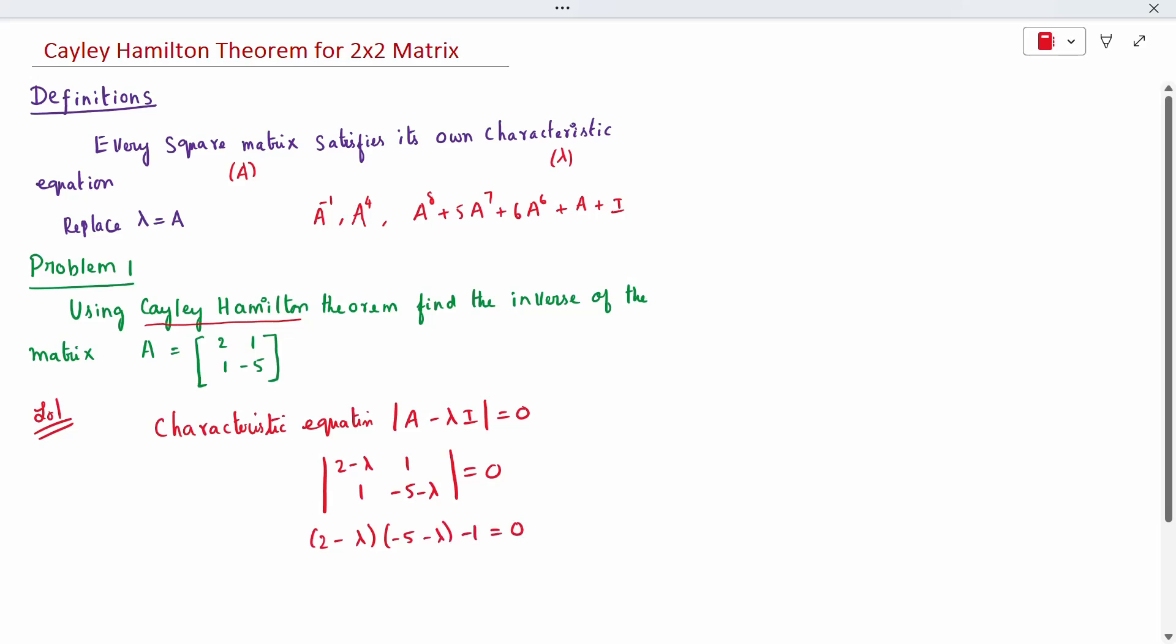2 minus lambda into minus 5 minus lambda minus 1. This is when I write it in simplified form. Lambda squared plus 3 lambda minus 11 equal to 0. I am getting this equation. I need not find the eigenvalue, eigenvector and all. You need not do at all in this.